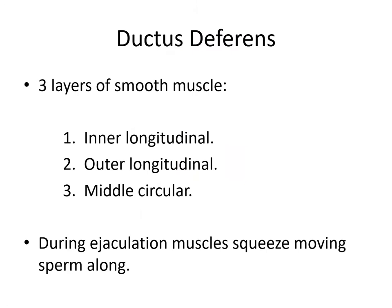The ductus deferens contains three layers of smooth muscle: an inner longitudinal, an outer longitudinal, and a middle circular layer. During ejaculation, these muscles squeeze, moving the sperm along.